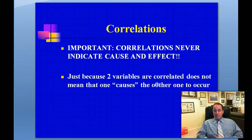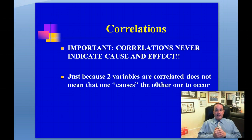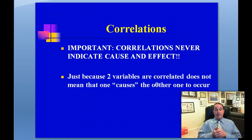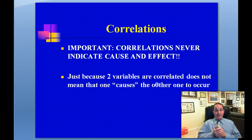The most important point about correlations is that they never indicate cause and effect by themselves. Just because two variables are correlated does not mean that one causes the other to occur. For example, there's a strong positive correlation between depression and anxiety, but we don't know whether being depressed causes anxiety or being anxious causes depression. Correlations only tell you the relationship between variables — not causation.